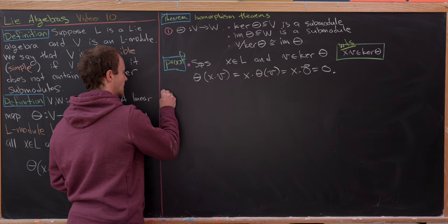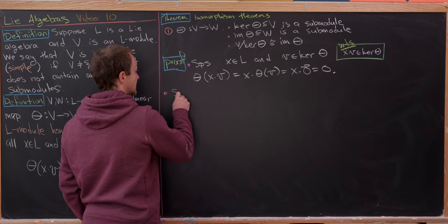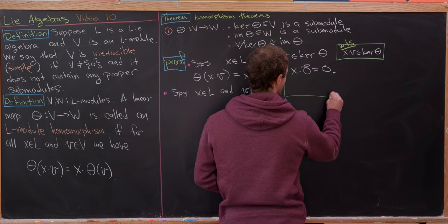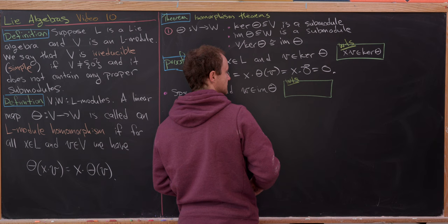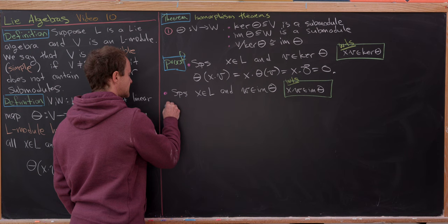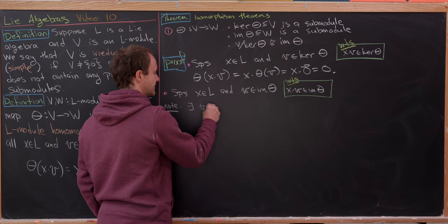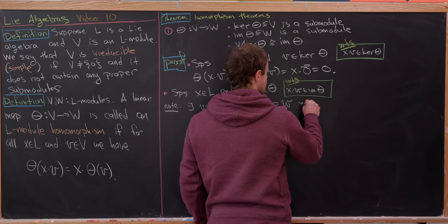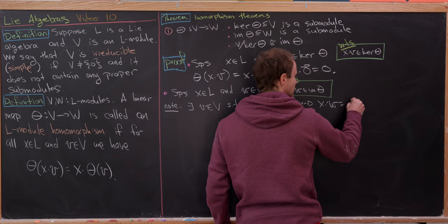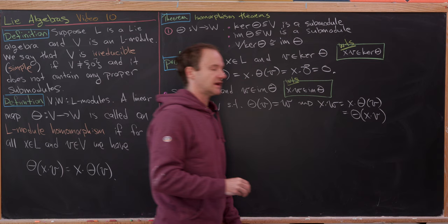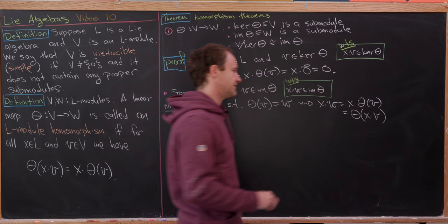Now let's show the image is also a submodule. Suppose x is in L and w is in the image of θ. We want x·w to also be in the image. Since w is in the image, there exists v in V such that θ(v) = w. Then x·w = x·θ(v) = θ(x·v), which is in the image of θ — exactly what we need.